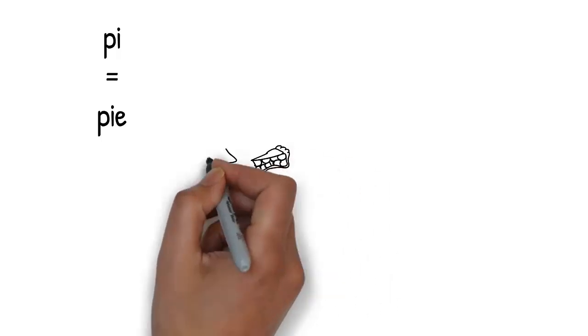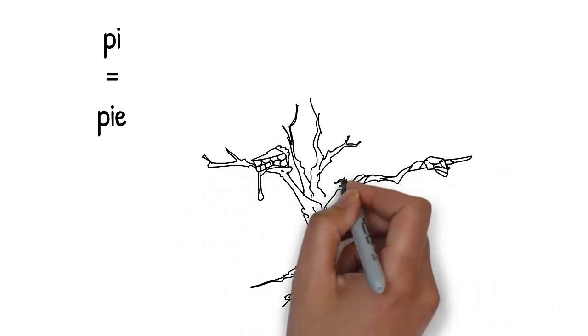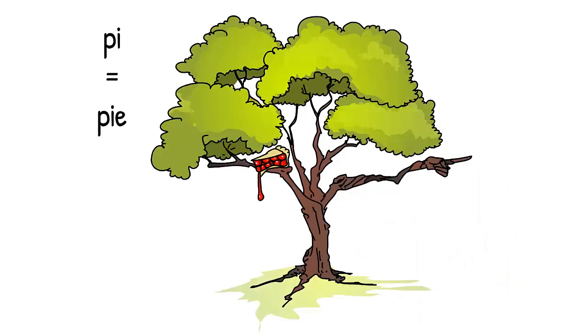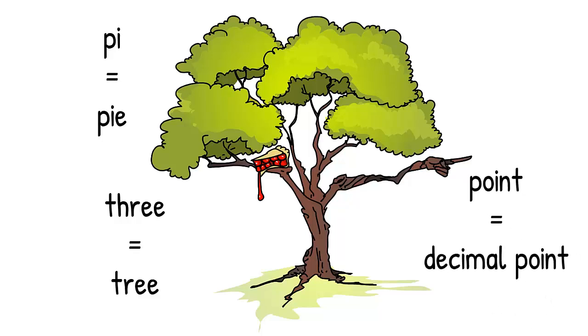When you want to recall Pi, picture a large slice of pie. It's sitting in the branches of a tree and it's cherry pie with red cherry filling. Because the pie is in a tree and tree rhymes with three, you'll know the first digit is three. The end of one of the branches of the tree looks like a hand pointing at something. Tree point. Three decimal point.